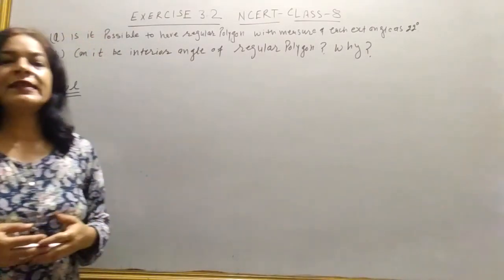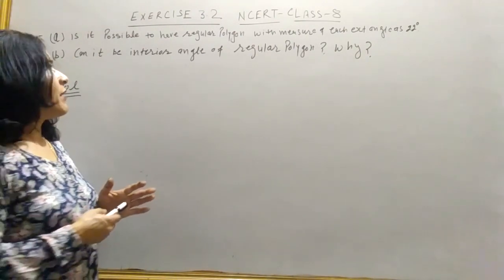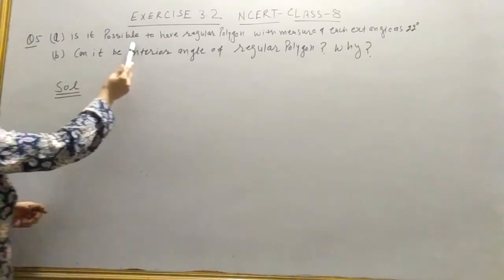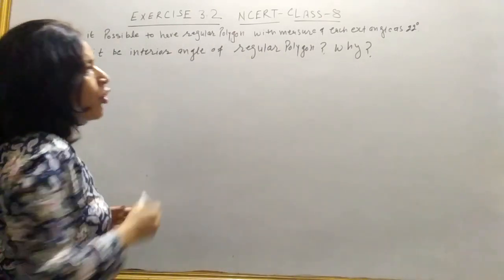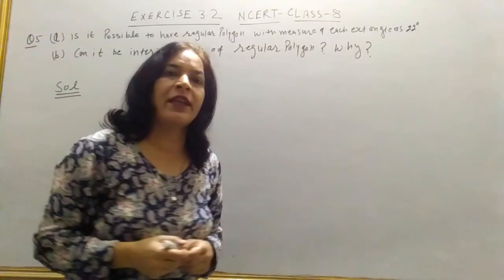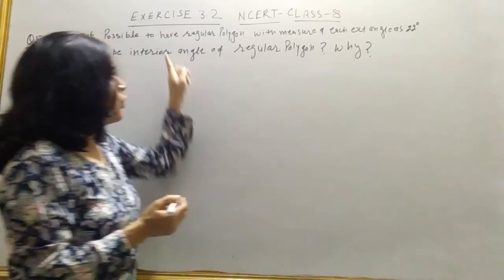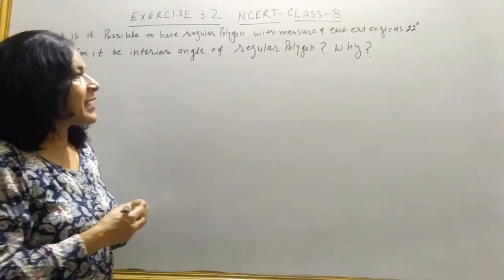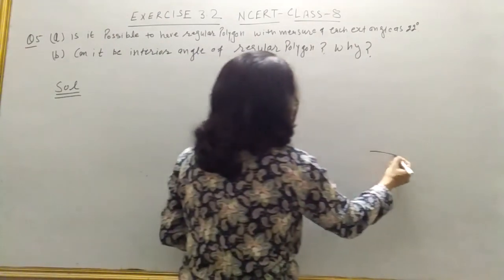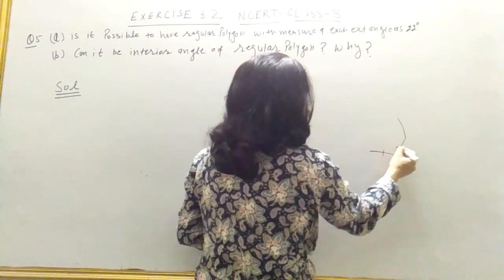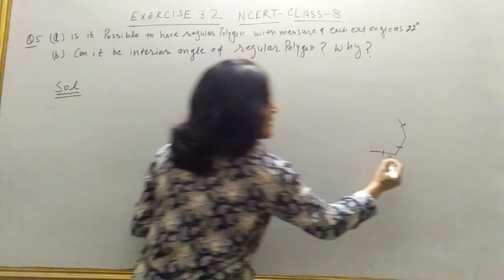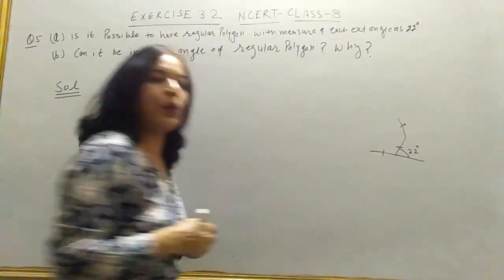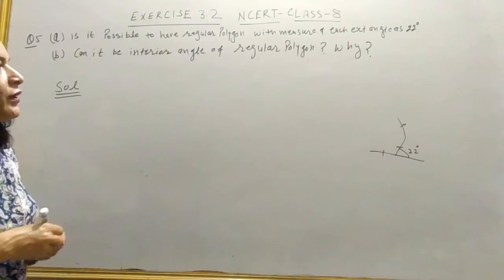Hello everyone, students. Now in question number 5, exercise 3.2, he is asking: is it possible to have a regular polygon with measure of each exterior angle 22 degrees? You know what a regular polygon is — all sides are equal. Now he is asking, is it possible to draw a regular polygon whose all sides are equal and measure of exterior angle is 22 degrees? Now you know the formula.